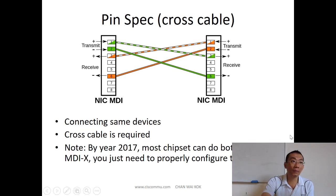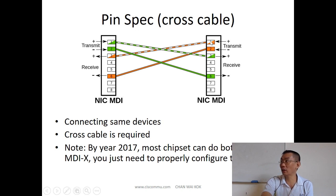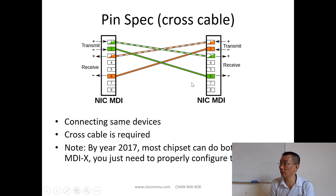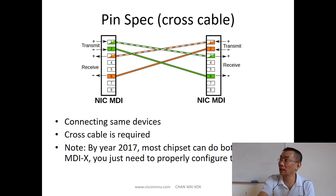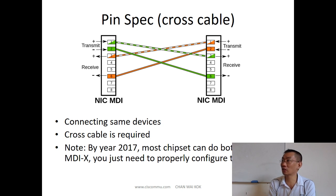This is a crossover cable. If you want to connect one network card directly to another network card, the pin spec is the same, so you can't connect transmit to transmit. You need a crossover cable: pin 1 to 3, pin 2 to 6 — so you make the cable yourself to connect PC to PC. Nowadays, most advanced chipsets in NICs can do the switching internally, and some even do it automatically. Some require configuration on the Cisco switch. Because crossover cables are messy, most cables used are straight-through.